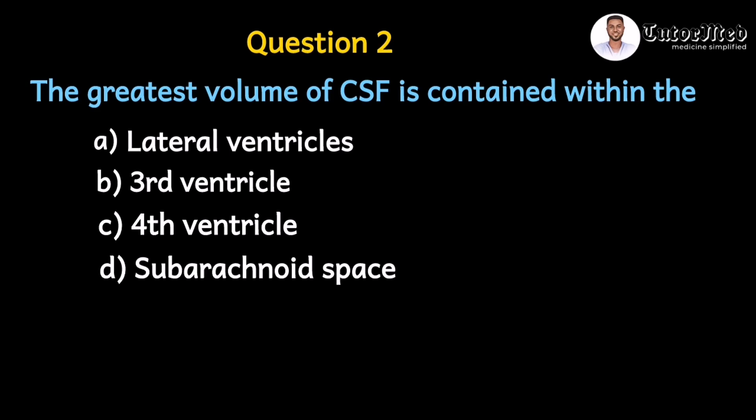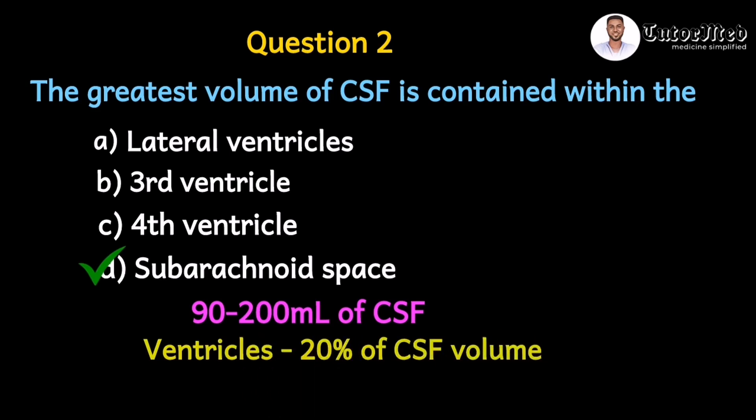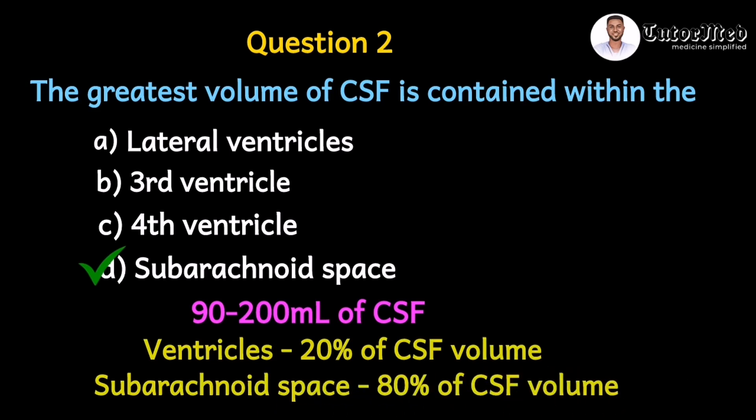The correct answer is option D, the subarachnoid space. The choroid plexus produces CSF which flows through the ventricles and exits into the subarachnoid space through the foramina of Luschka and Magendie. The total CSF volume is about 90 to 200 mLs. The ventricles contain only 20% of the CSF volume, while the remaining 80% is found in the subarachnoid space.